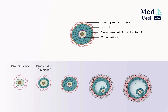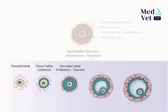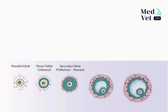In this state of follicular development, the follicle is classified as a secondary follicle, characterized by being multilaminar. The different stages of development up to this point are also called preantral follicles, and their evolution to antral follicles only occurs after puberty.